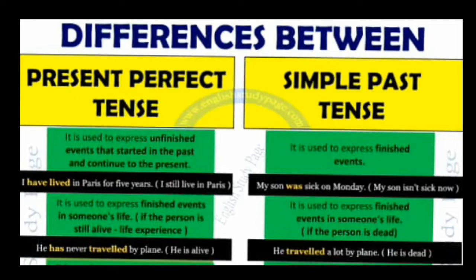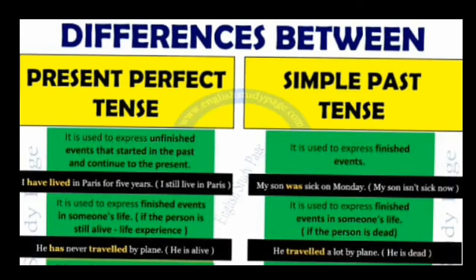अब next बात करते हैं — कहाँ पर Present Perfect tense का use करेंगे और कहाँ पर Simple Past tense का use करेंगे, means कि दोनों के बीच में difference क्या है। Present Perfect tense का use हम लोग उसके लिए करते हैं जो perfectly खत्म हो चुका हो। It is used to express an unfinished event that started in the past and continues to the present. और ऐसा काम जो पूरी तरह से past में start हो और past में खत्म हो गया, तो वहाँ पर Simple Past tense का use करेंगे।